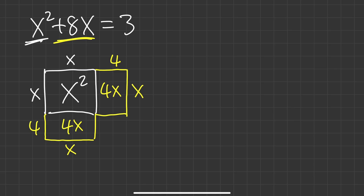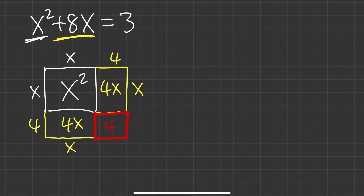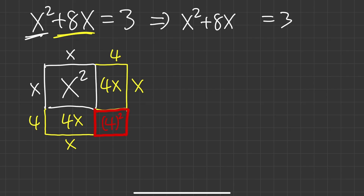If you look at this picture, something is missing — there's a little corner. If we can fill in that corner, we can complete the square. That missing side is 4 by 4, so the missing area is 4 squared, which is 16. So we write x squared plus 8x and add 4 squared, which is 16.